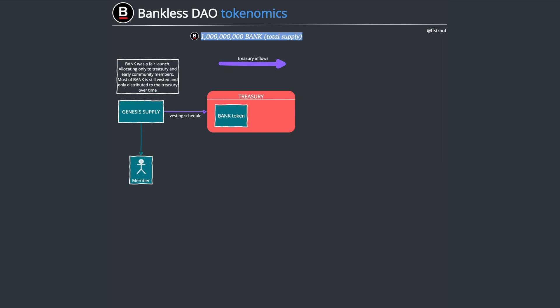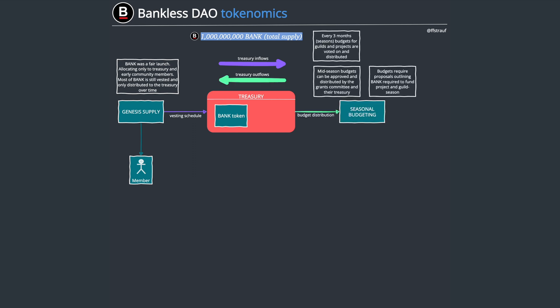So there's now a diverse set of token holders. The treasury holds these BANK tokens and receives more over time via a vesting schedule, and a bunch of people also hold these tokens.